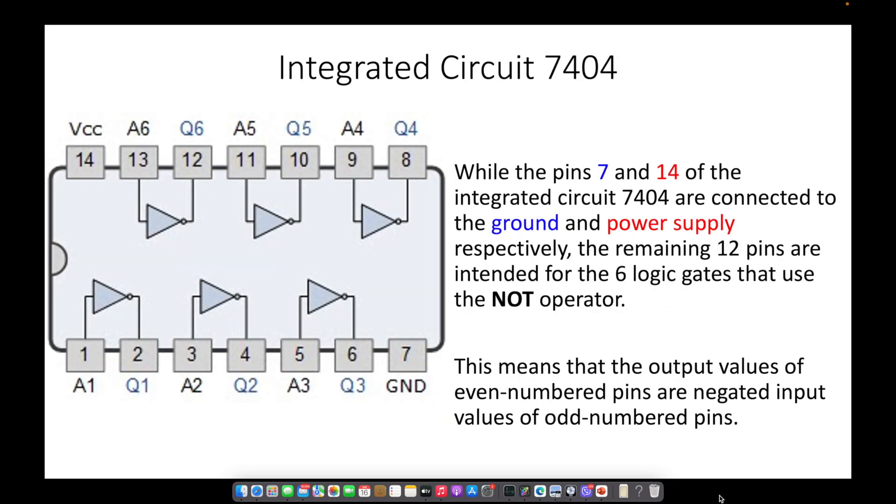While the pins 7 and 14 of the integrated circuit 7404 are connected to the ground and power supply respectively, the remaining 12 pins are intended for the 6 logic gates that use the NOT operator.